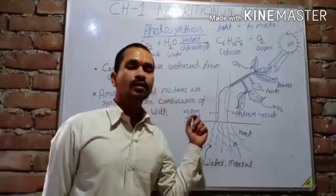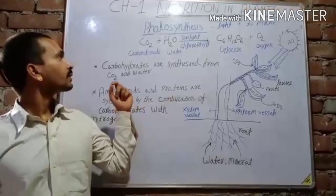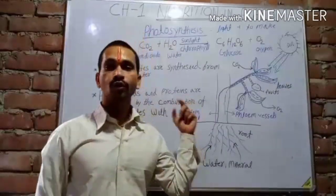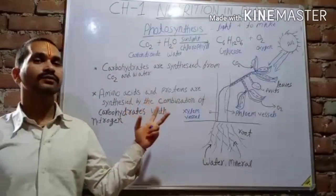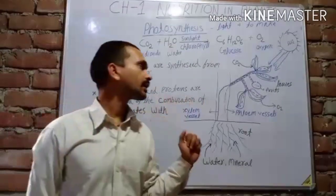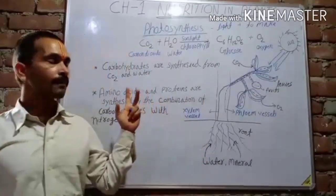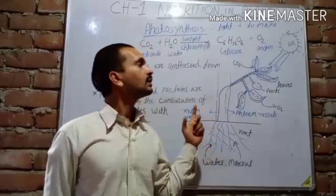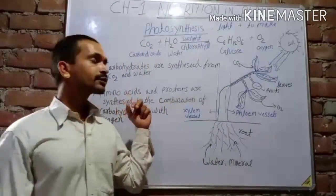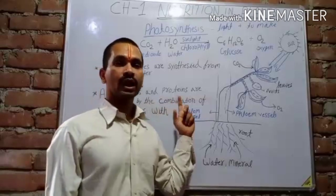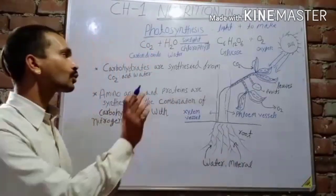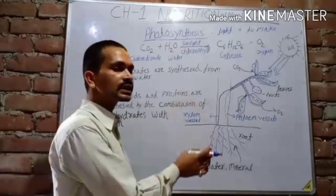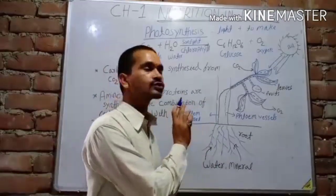There are three uses of photosynthesis. First, due to photosynthesis, plants give us a lot of food and energy for living beings. Second, after photosynthesis, plants release oxygen gas, which is a life-supporting gas for us. Third, photosynthesis maintains the balance between oxygen and carbon dioxide.